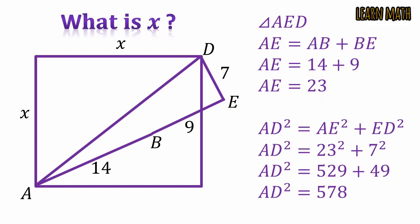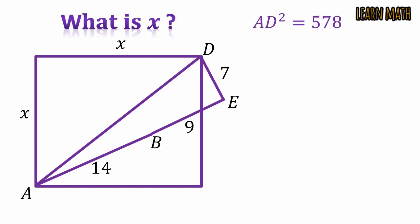So the length of the diagonal in this figure is equal to square root of 578. Let this point be F. Take the right angle triangle AFD.